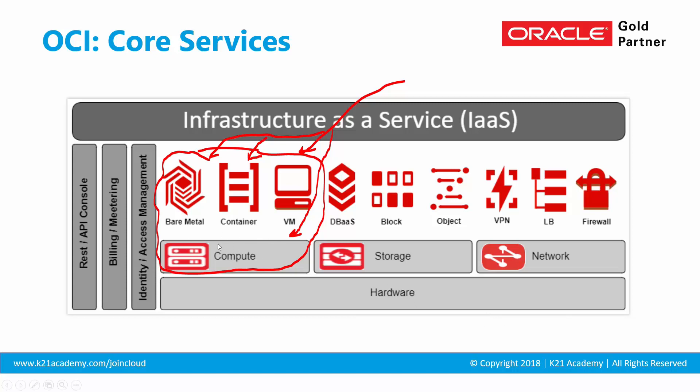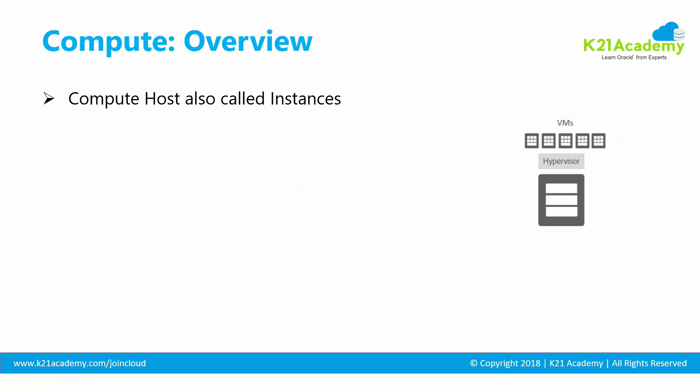One of the most important things is compute. As shown in the diagram, you have bare metal or virtual machine, and on top of that you can also run containers — though containers are outside the scope of this module. Container is another technology worth googling around Docker or Kubernetes. In the context of OCI, we will focus on virtual machine and bare metal. A compute host is essentially a machine which has a CPU, memory, storage, and networking — together these make up a compute.